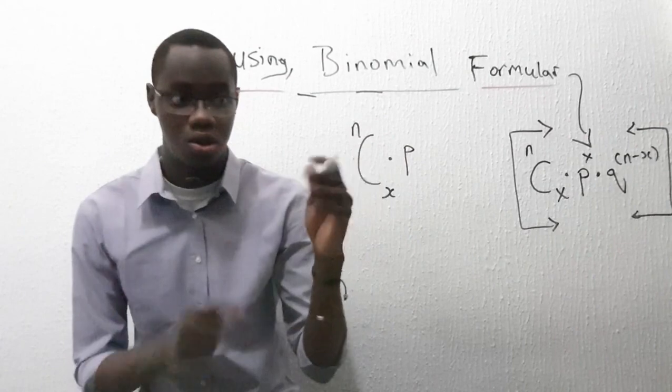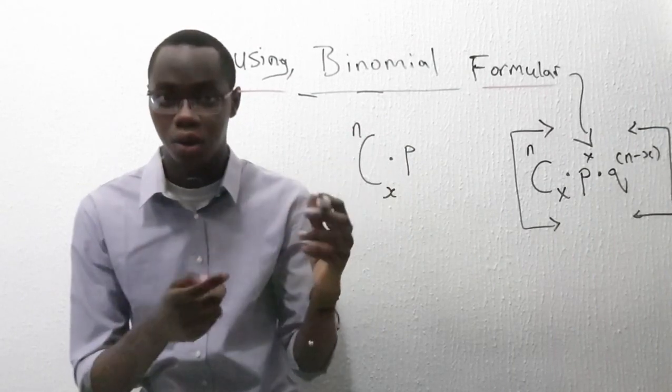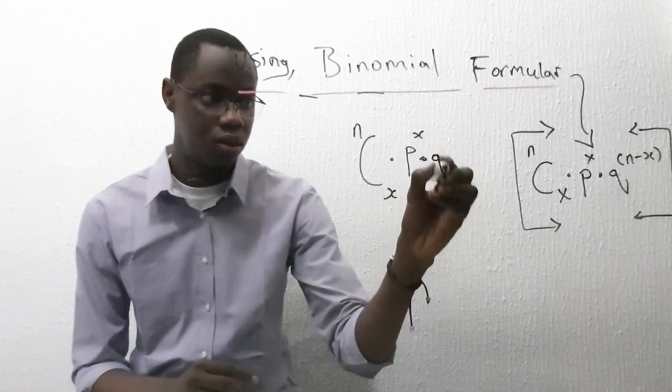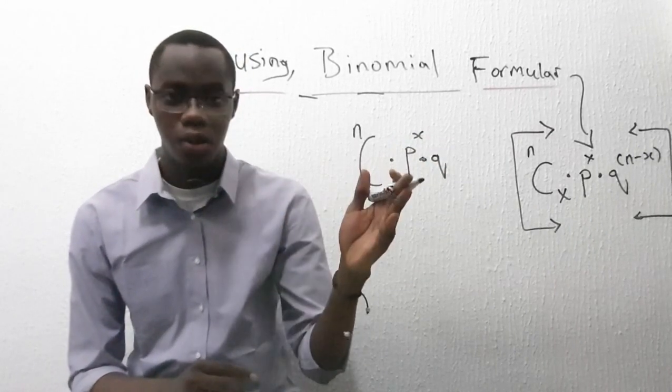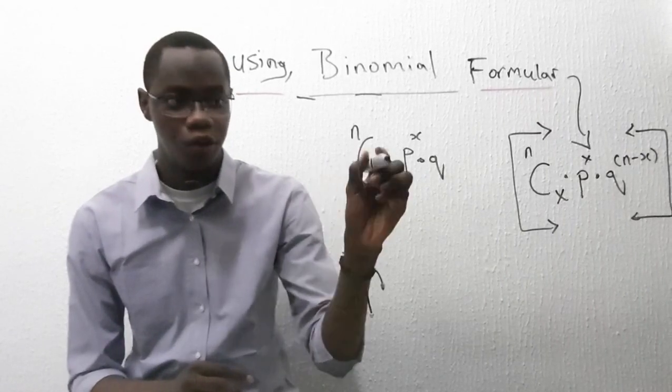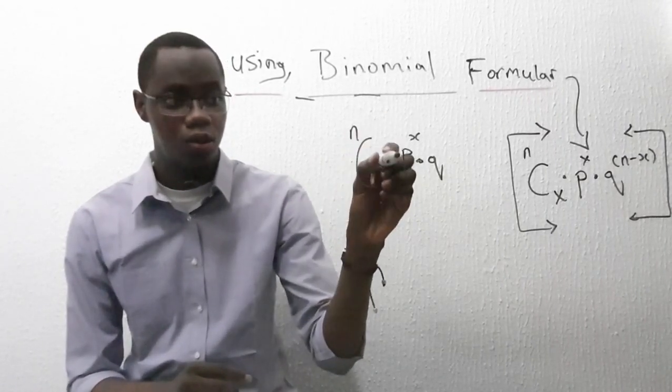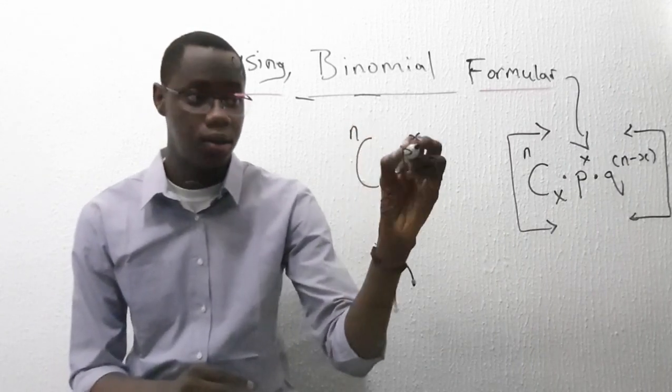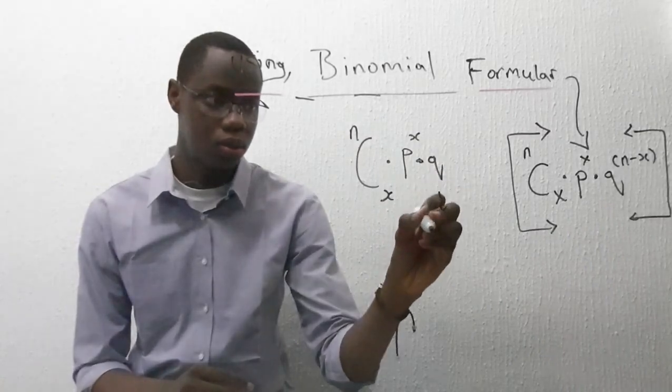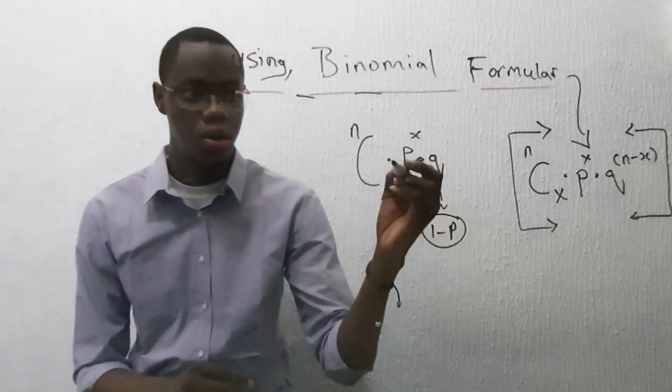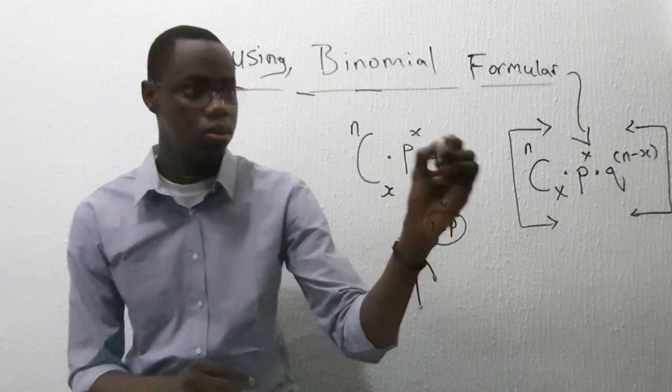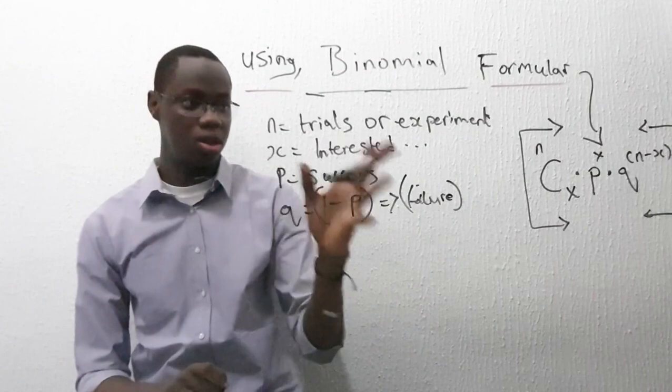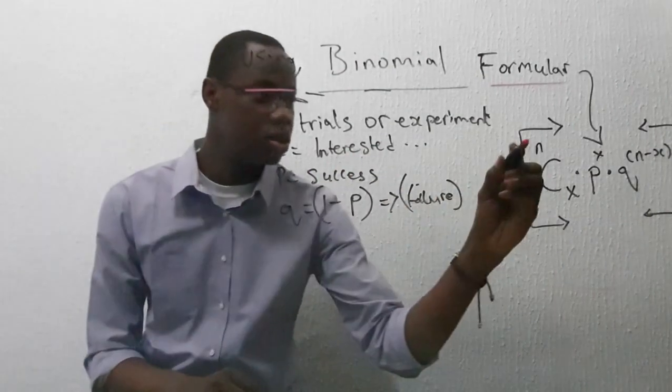P is the number of successes, the success rate, which will be in the question or we'll be able to find it. X again. Q is the failure rate, which is the opposite of P. So if you have P in the question or we find P, what we just need to do is Q would be equal to 1 minus P. So then N minus X, which we already know. So this is the binomial formula.